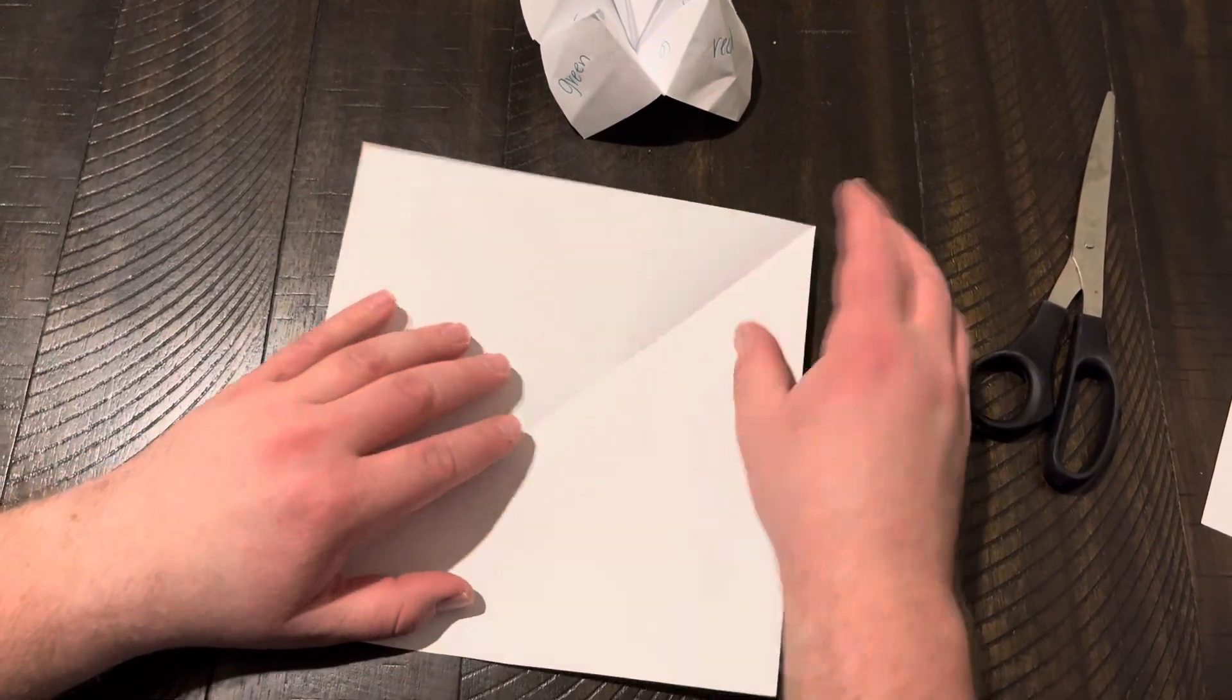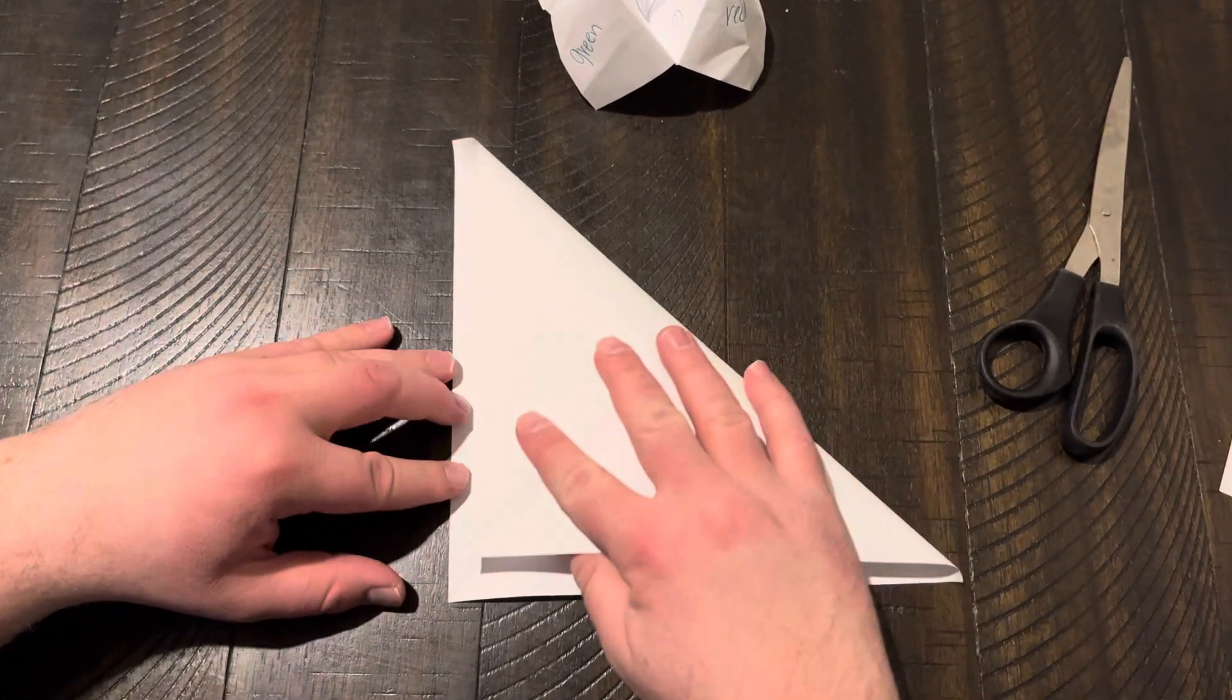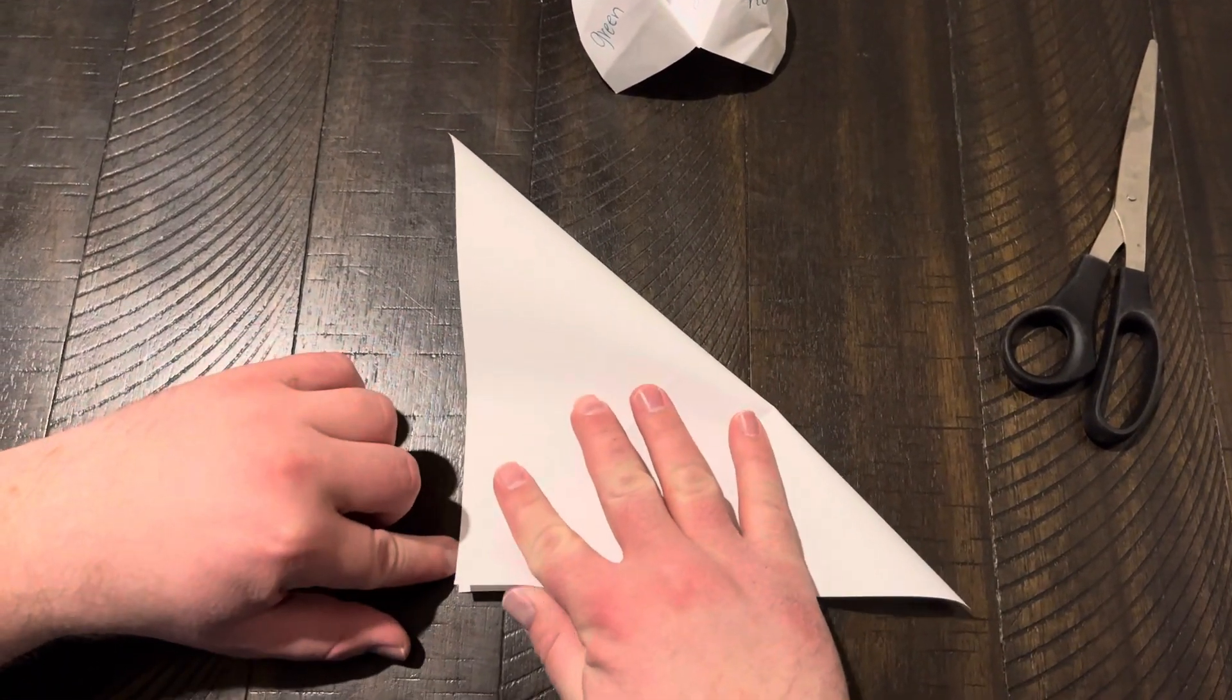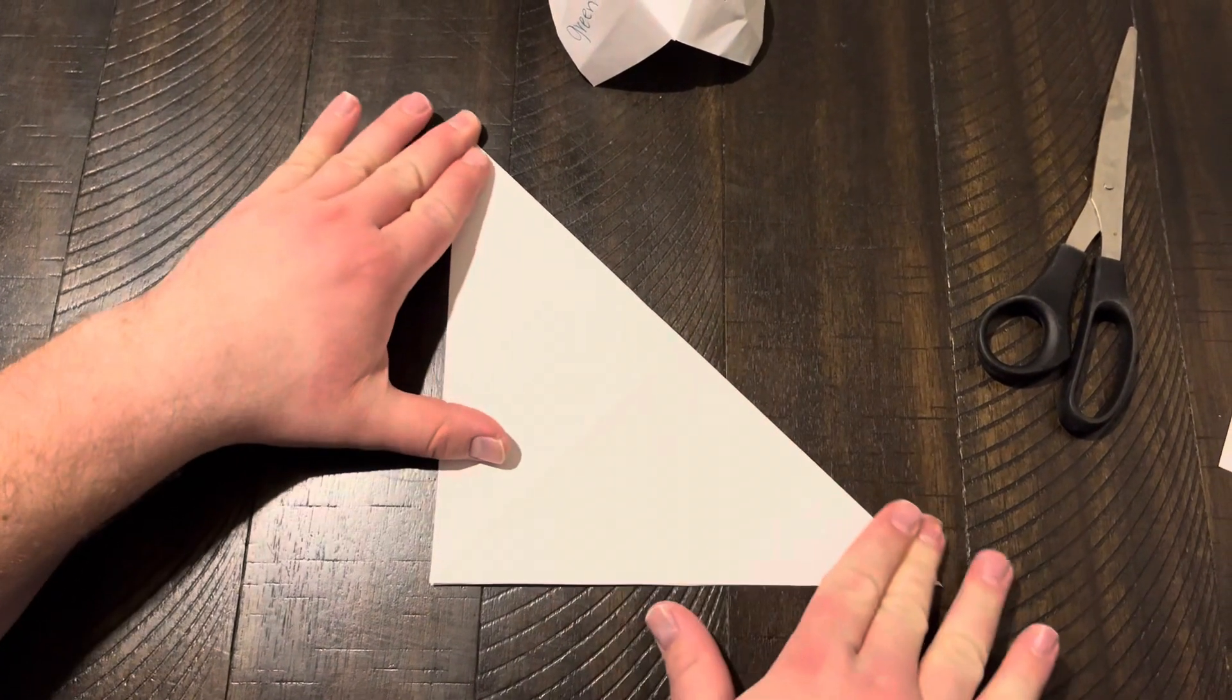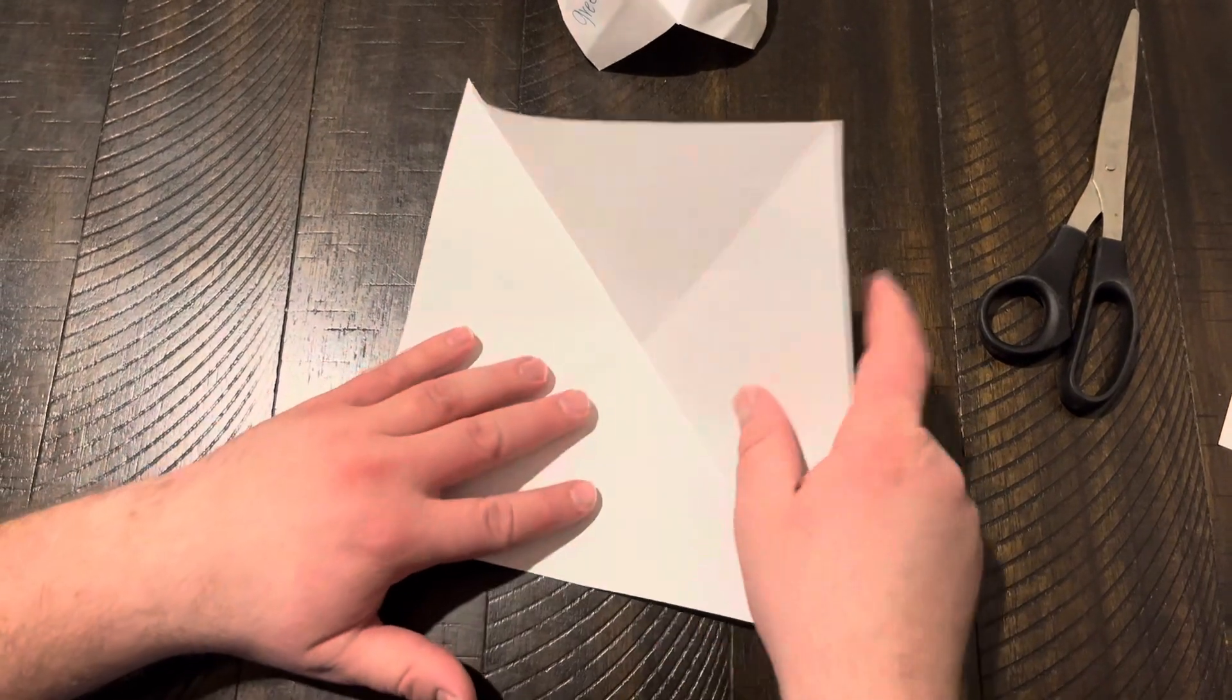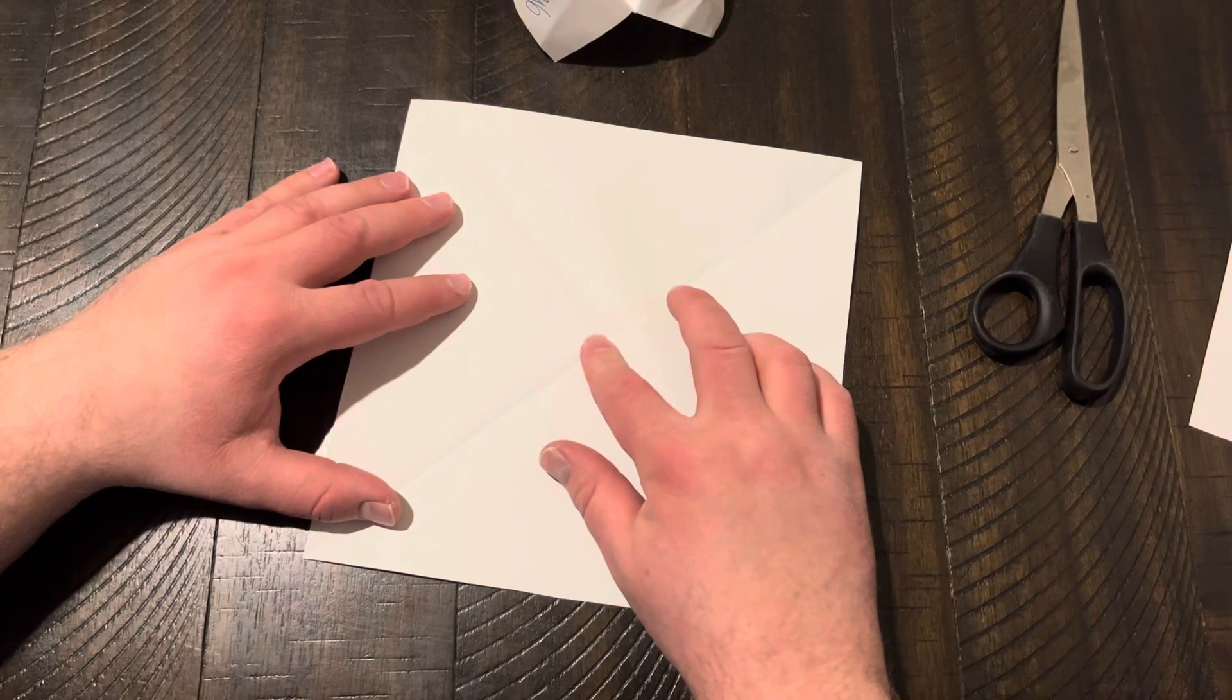So we've already got this crease here. We're gonna fold this corner down to here. Make sure it lines up as close as possible. Now you open. Now you've got a nice X right in the middle.